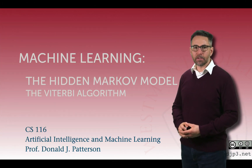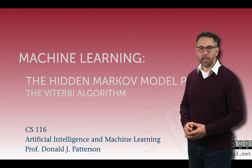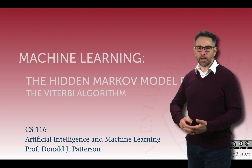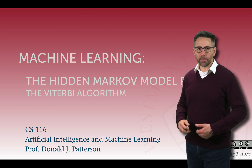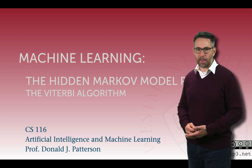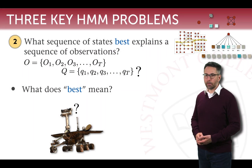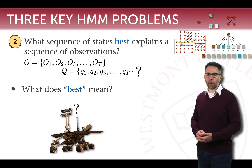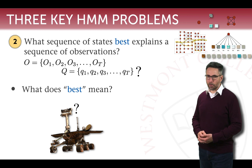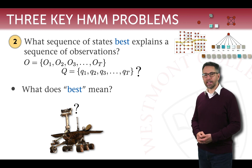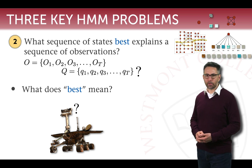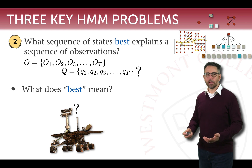Welcome to part 11 of this video series on the hidden Markov model. Today I want to talk about the second key question for hidden Markov models, motivated in our previous video. We're going to work on how we algorithmically and mathematically solve that problem. Our problem is motivated by a robot moving through a world and observing floor coverings but not having any other information about where it is. We want to answer: what sequence of states best explains a sequence of observations? How do we recover the path that the robot traveled through the apartment only by looking at the floor coverings it traveled over?